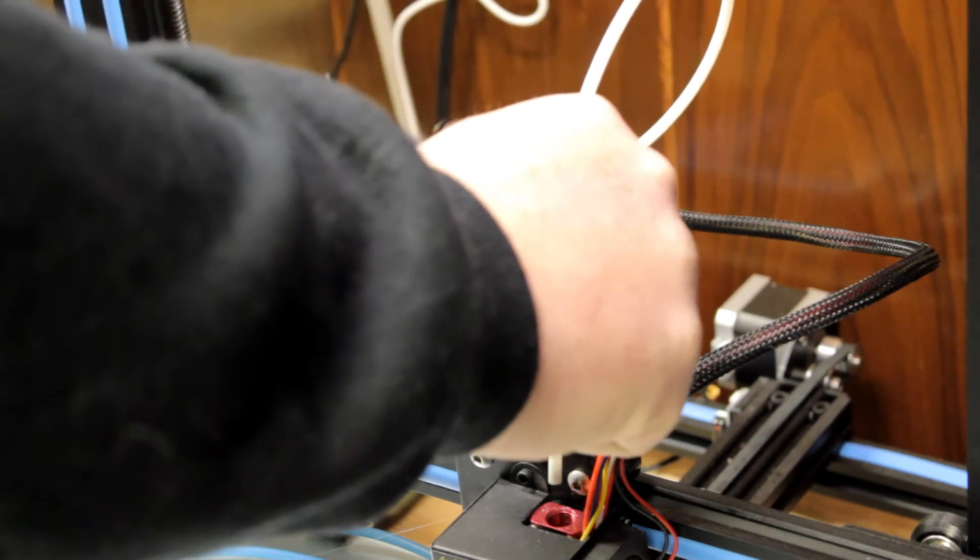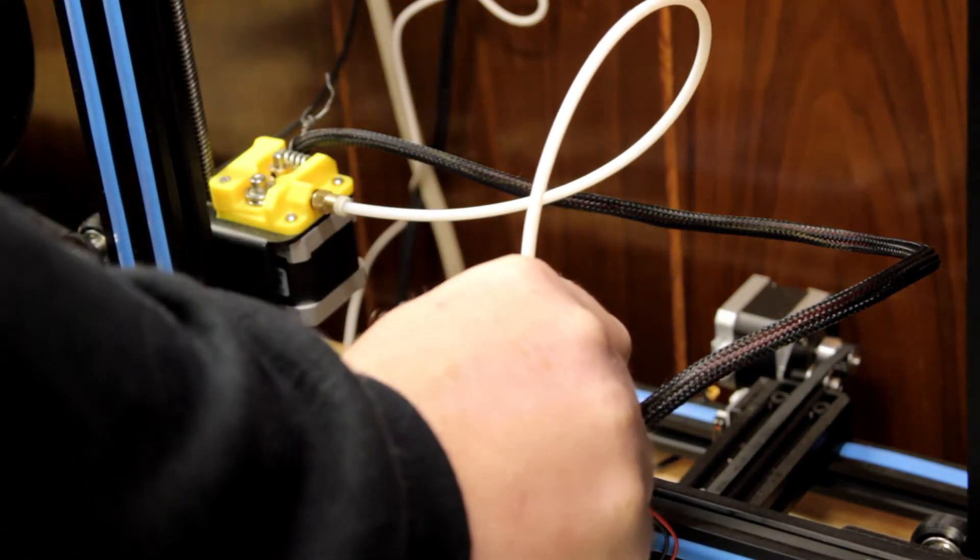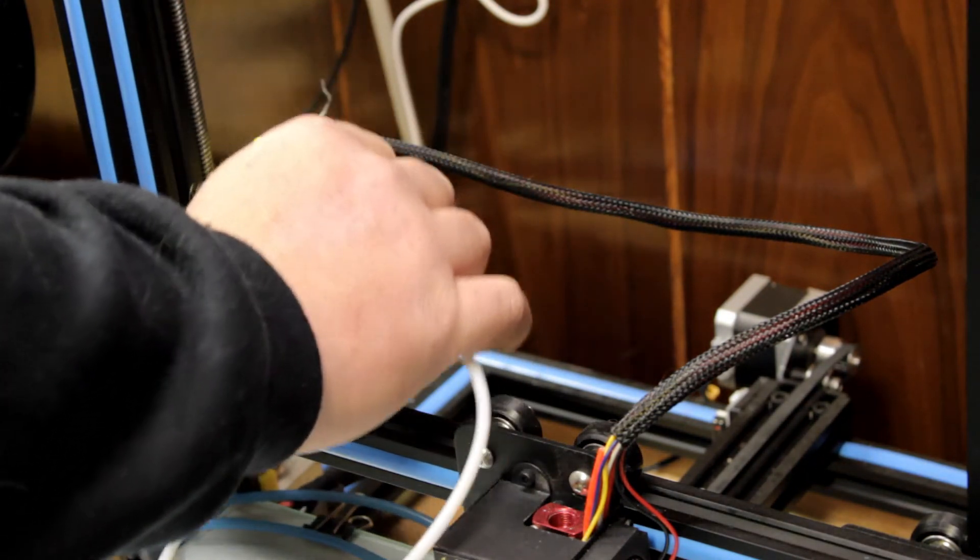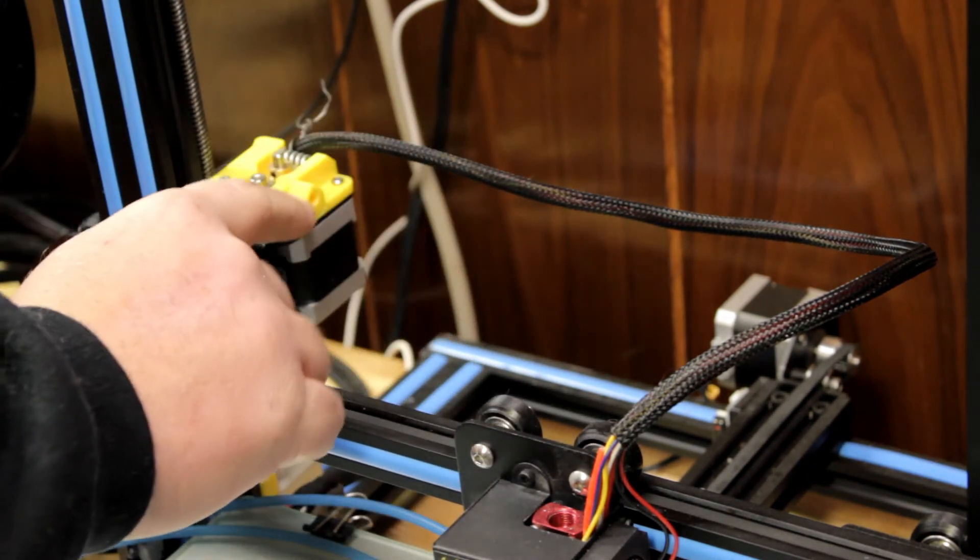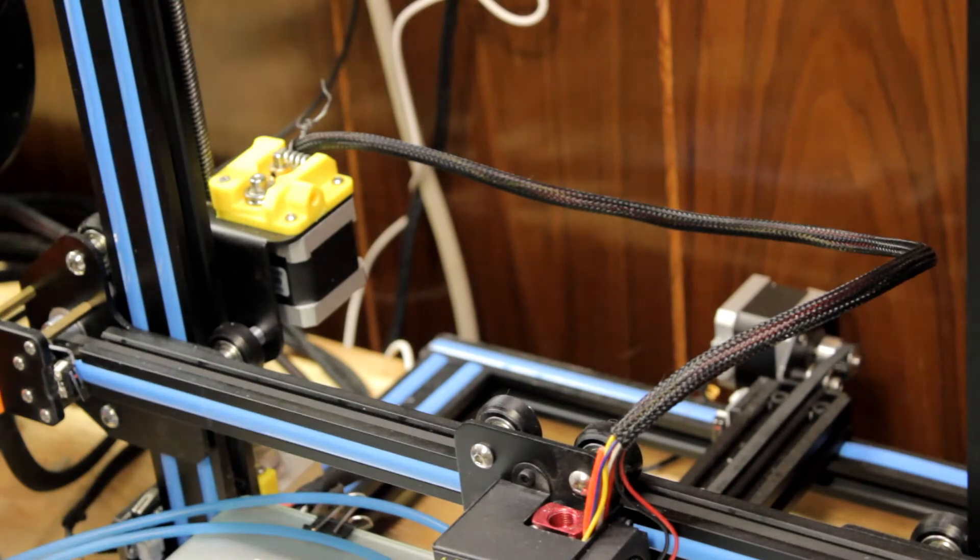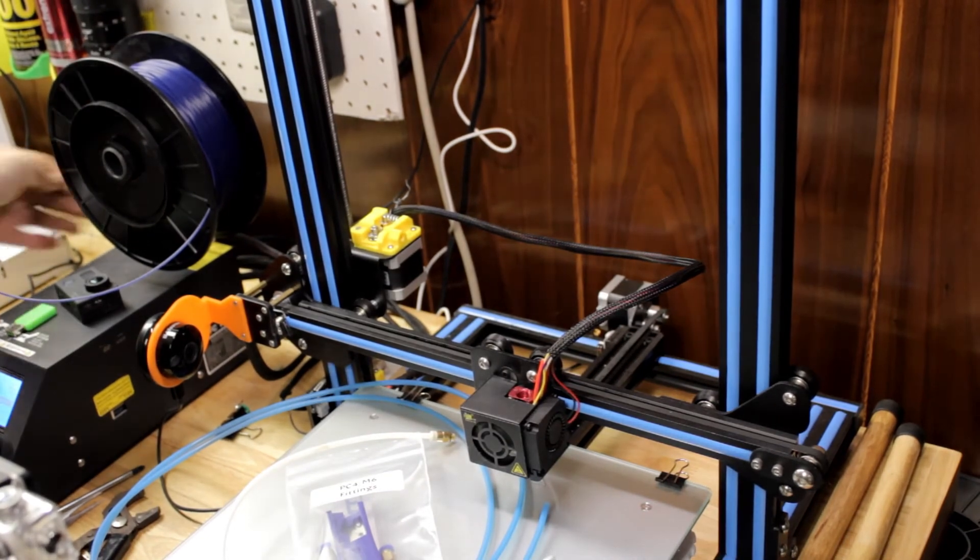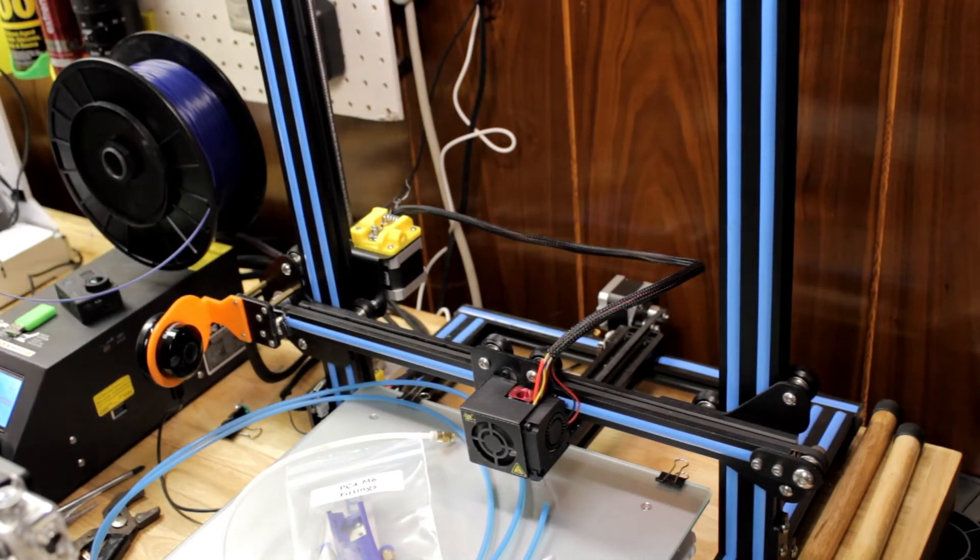So this PTFE tube goes all the way down to the nozzle itself. I'm being real careful with this connection because I have heard of this part blowing out and I just don't want to reprint it. All right. So now that we have the old Bowden tube out, I'll zoom you out a bit.